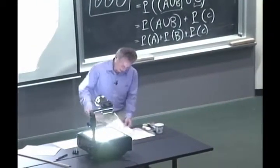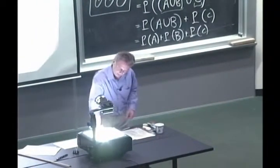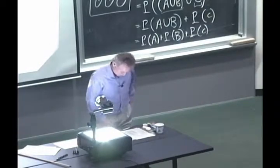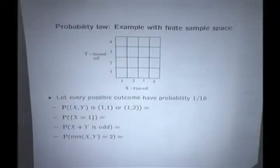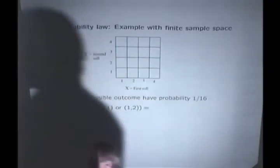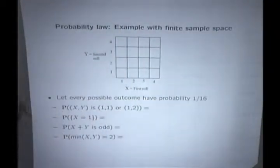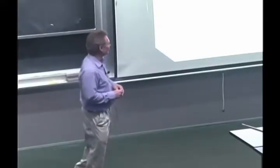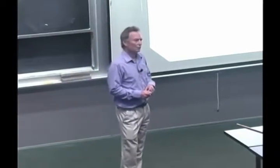Okay, so now let's revisit our examples. Let's go back to the die example. We have our sample space now, we need to assign a probability law. There's lots of possible probability laws that you can assign. I'm picking one here arbitrarily in which I say that every possible outcome has the same probability of 1 over 16.